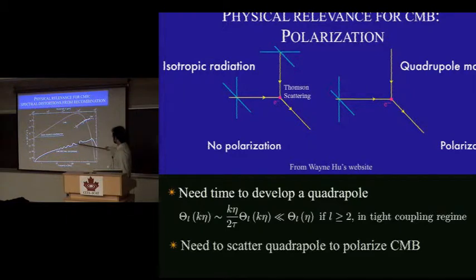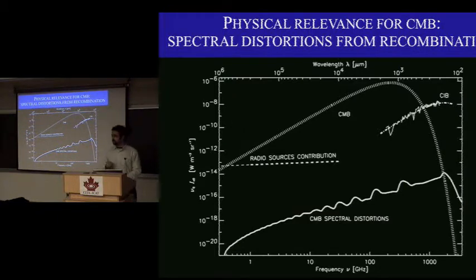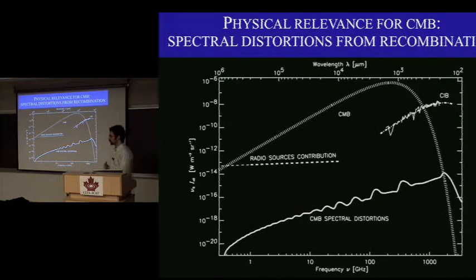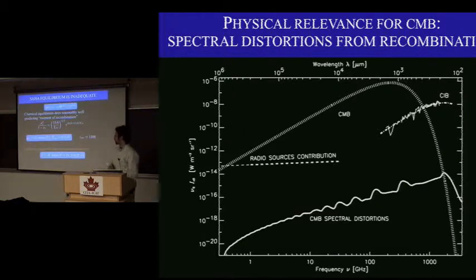Moving from CMB anisotropies to the spectrum of the CMB, it's thought that the recombination epoch produces spectral distortions — all the bound-bound transitions from the epoch of recombination. This is a tiny signal, suppressed by a factor of a million or ten million relative to the overall CMB spectrum. But there is some hope that it could be detected someday. It would be really neat because it would be a direct probe of recombination physics, a global homogeneous signal across the whole sky, unfiltered through the Boltzmann hierarchy of anisotropies.